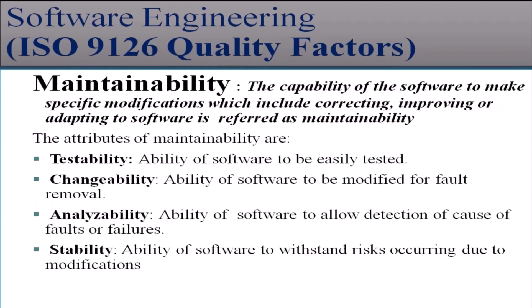The next factor is maintainability. The capability of the software to make specific modifications — which includes correcting, improving, or adapting the software — is referred to as maintainability. The attributes of maintainability are testability, changeability, analyzability, and stability. Testability means ability of the software to be easily tested. Changeability means ability of the software to be modified for fault removal. Analyzability means ability of the software to allow detection of the cause of faults or failures. Stability means ability of the software to withstand risks occurring due to modifications.